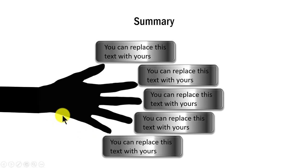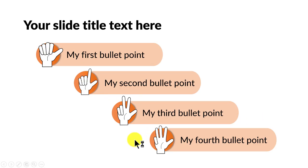If you don't want to use the photos of a hand, then you can use the digits of the hand as an icon. As you can see here, this is a very interesting way to represent my first bullet point, second bullet point, third, fourth, etc.